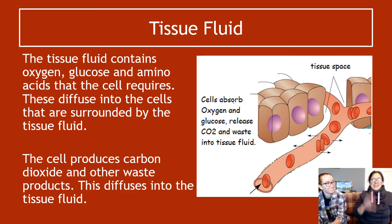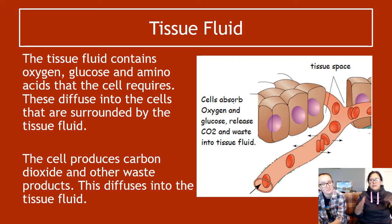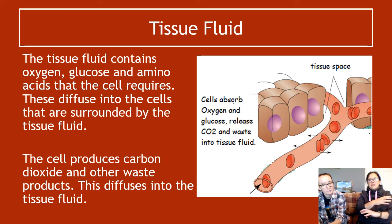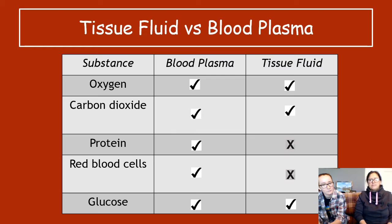The cells are also high in CO₂ and other waste products, so they use diffusion to move those things out into the tissue fluid. Basically, a swap occurs: useful things go into the cell, and waste products come out of the cell into the tissue fluid.